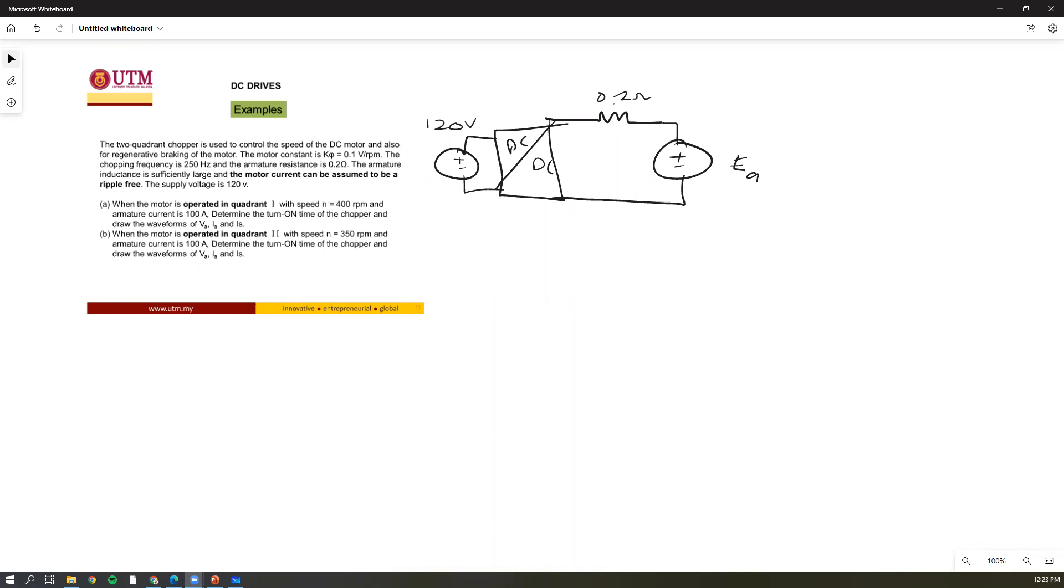The motor constant is given 0.1 V per rpm, so this one is your ke, because voltage over rpm. We also assume that this one is also your kt, because it has been not given, so we assume that kt and ke are actually the same.